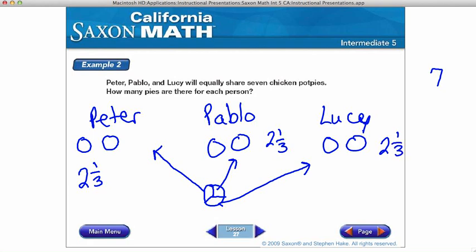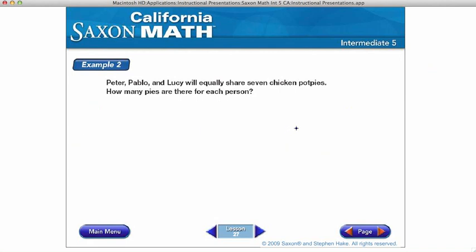Now, I can also do this using the algorithm, or writing the math problem. So I know there are seven chicken pot pies, and I'm dividing that between three people, Peter, Pablo, and Lucy. So seven divided by three, three goes into seven twice, two times three is six. I subtract, and I don't have anything to bring down. So this one would normally become my remainder.